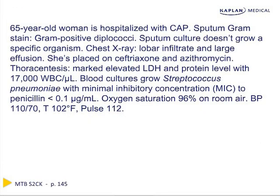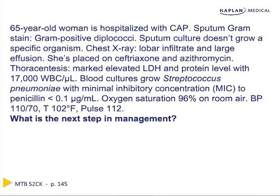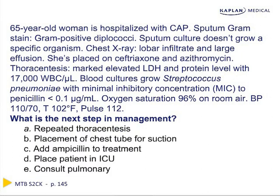Let's pause for a practice question. A 65-year-old woman is hospitalized with community-acquired pneumonia. Sputum gram stain shows gram-positive diplococci, but the sputum culture does not grow. Chest x-ray has a lobar infiltrate and a large effusion. She's placed on ceftriaxone and azithromycin, and thoracentesis is performed, which has a markedly elevated LDH, elevated protein level, and 17,000 white blood cells. Blood cultures grow Streptococcus pneumoniae with a MIC to penicillin less than 0.1. Oxygen saturation is 96% on room air, blood pressure 110/70, temperature 102, and pulse 112. What is the next step in management? The answer choices include repeated thoracentesis, placement of a chest tube for suction, adding ampicillin to treatment, placing the patient in the ICU, or consulting pulmonary.